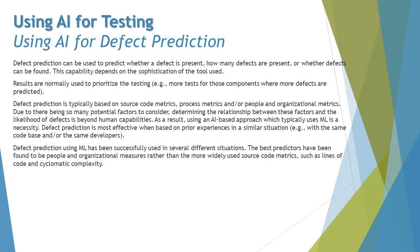Due to the many potential factors to consider, determining the relationship between these factors and the likelihood of a defect is beyond human capabilities. As a result, using an AI-based approach — which typically uses machine learning — is a necessity. Defect prediction is most effective when based on prior experiences in a similar situation.